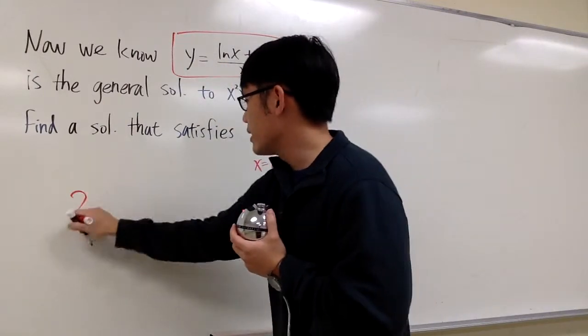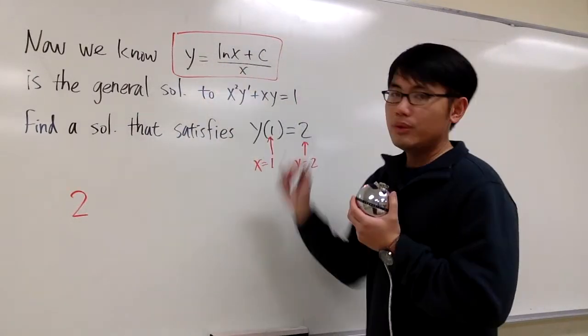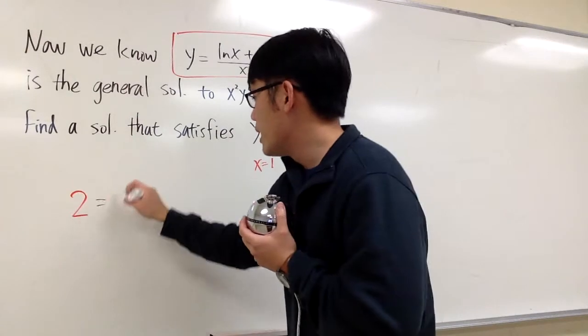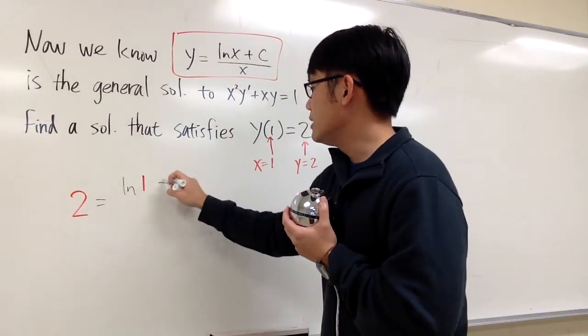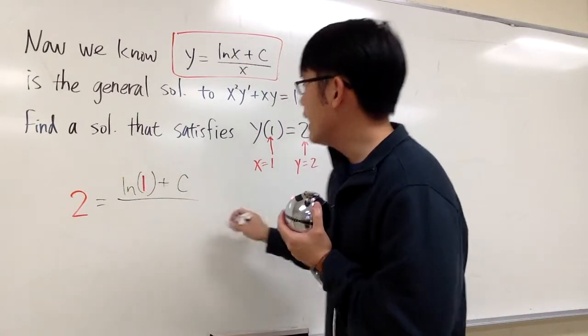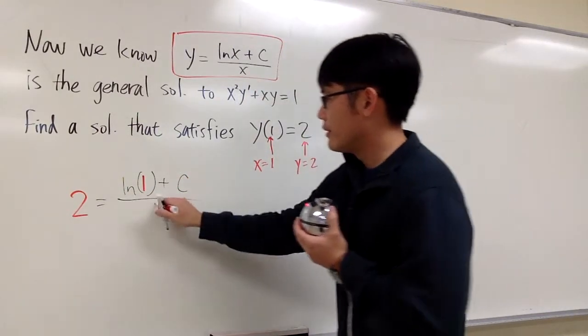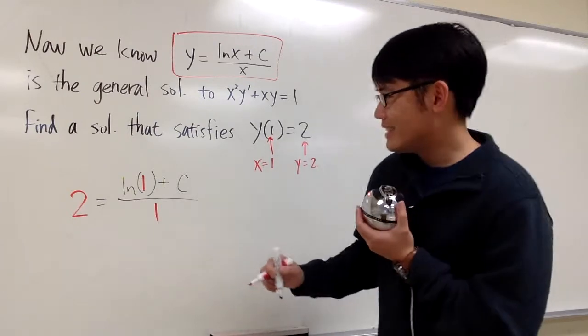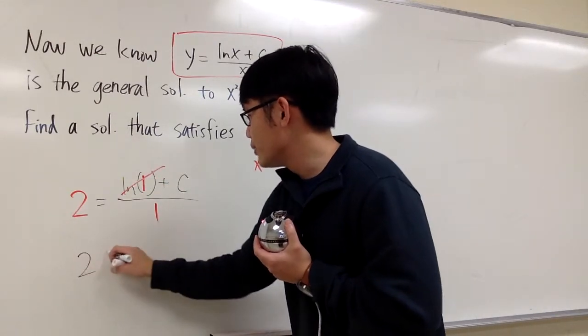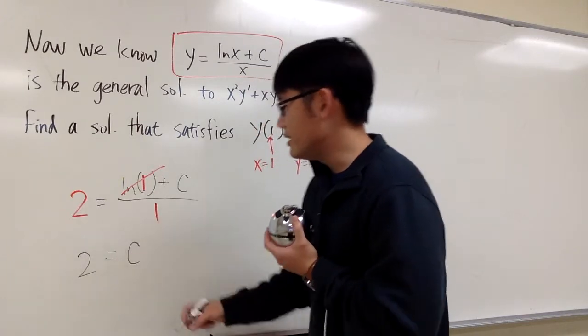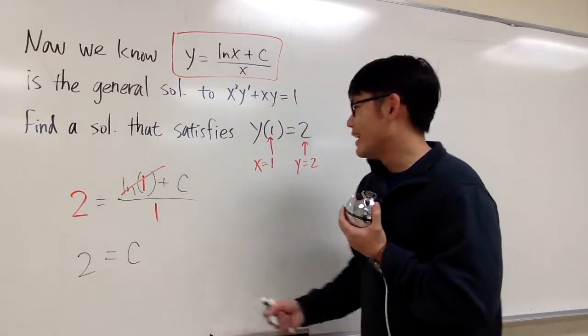Plug in 2 for y. We get 2, and that's equal to ln of 1 plus c. I don't know what the c value is yet. And then on the bottom, we have the 1. And ln of 1 is just 0. And then all in all, we have 2 equals c over 1, which is c. So we have c equals 2. And now what?